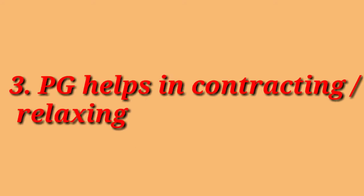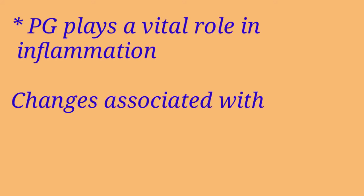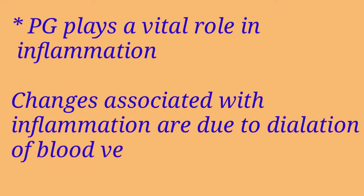Prostaglandin helps in contracting or relaxing smooth muscles. Prostaglandin plays a vital role in inflammation, a process characterized by redness, heat, pain, and swelling. The changes associated with inflammation are due to dilation of local blood vessels that permit increased blood flow to the affected area. Drugs such as aspirin or ibuprofen inhibit prostaglandin synthesis and are effective in suppressing inflammation, but should be taken under doctor's advice.